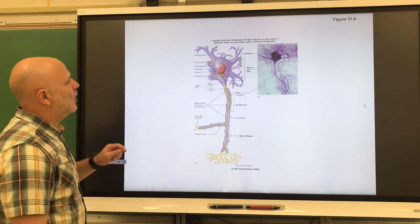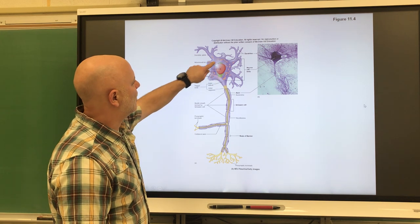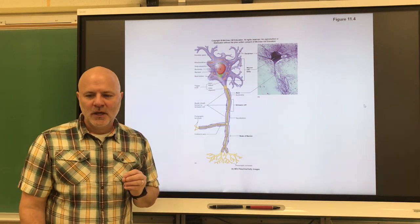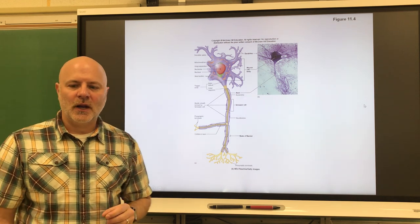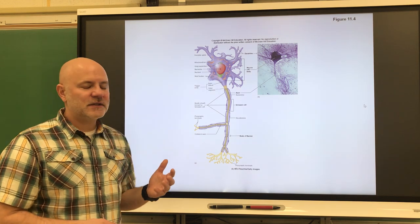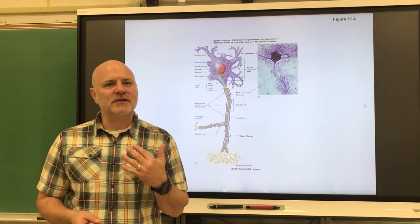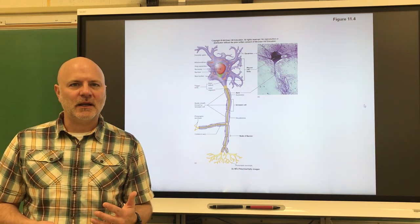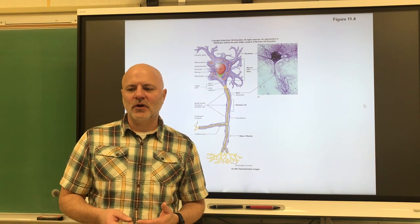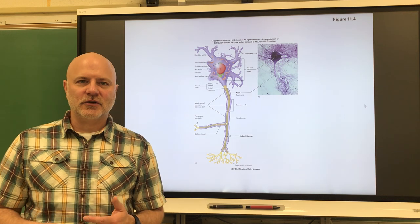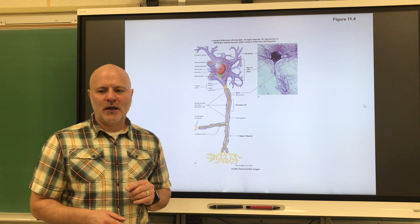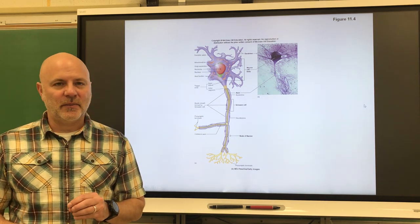Let's look at the parts of a neuron. One is the cell body — this rounded area of the neuron that contains a nucleus and other organelles. The cell body is found within the central nervous system or within ganglia. Ganglia are a collection of nerve cell bodies outside of the central nervous system. So there are only two places for those cell bodies.